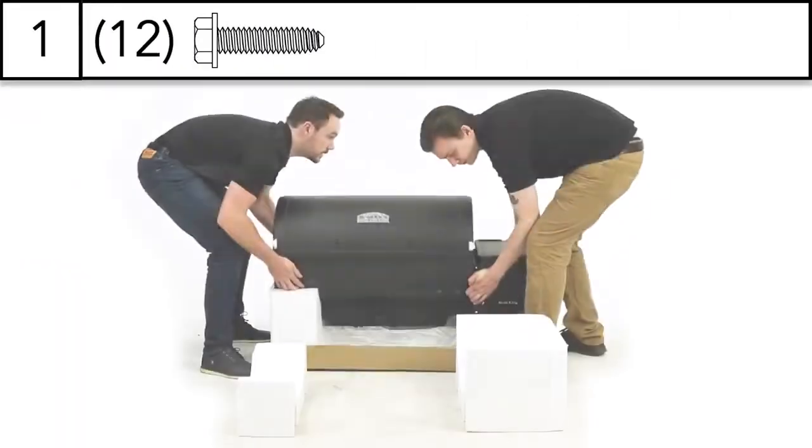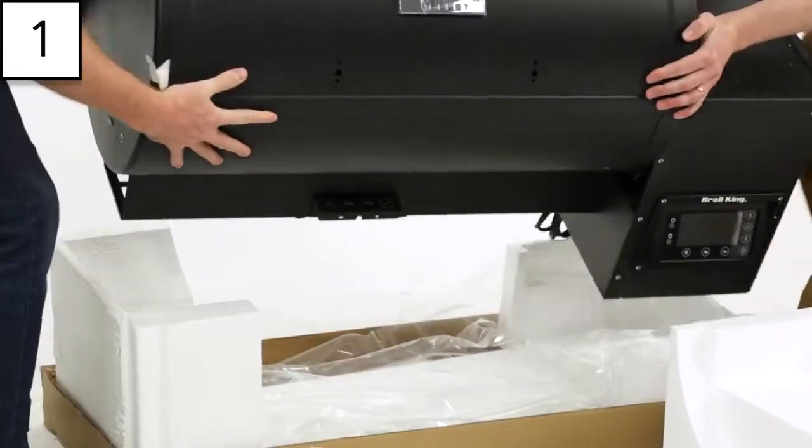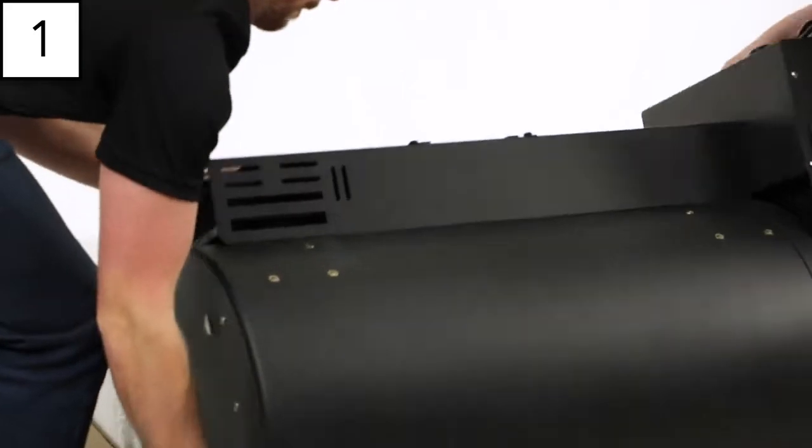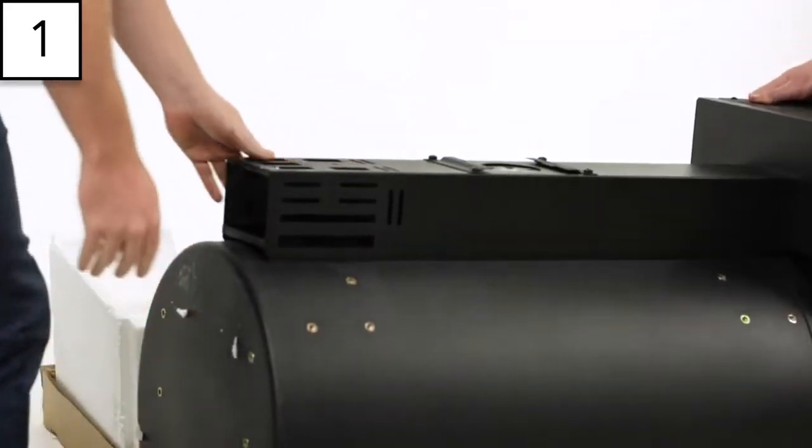Step 1. With the help of another person, flip the grill upside down. Use the styrofoam from the grill's packaging to secure the grill in place while upside down.